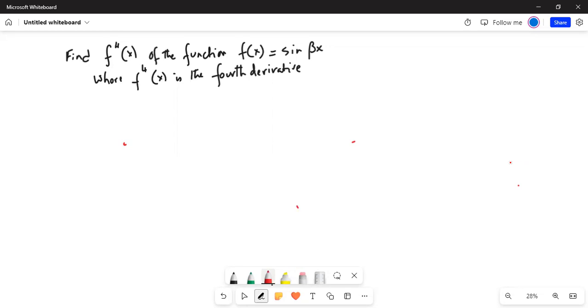Find f⁴(x) of the function f(x) = sin(βx), where f⁴(x) is the fourth derivative. Let's write the solution.